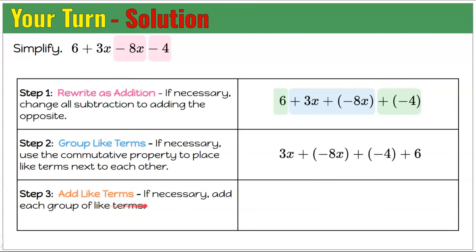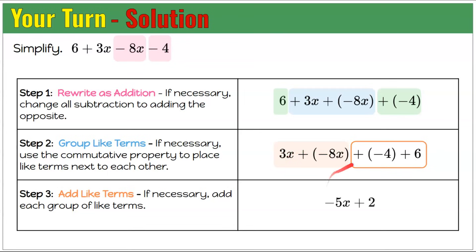Step 3: add like terms. 3x and negative 8x give negative 5x. Negative 4 add 6 is positive 2. So this expression in simplest form, by combining like terms, is negative 5x add 2.